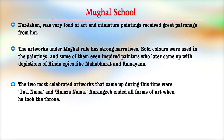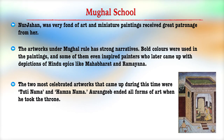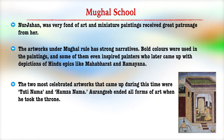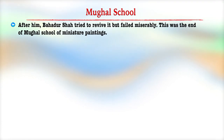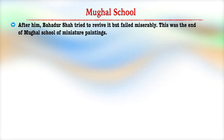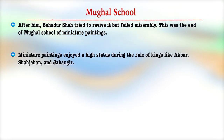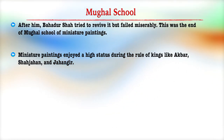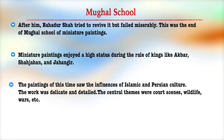The two most celebrated artworks from this period were the Tutinama and the Hamzanama. Though Aurangzeb ended all forms of art when he took the throne, his successor Bahadur Shah tried to revive it. There was a decline of the Mughal school of miniature painting under Aurangzeb. However, the paintings enjoyed great patronage during the rule of emperors like Akbar, Shah Jahan, and Jahangir, and saw the influence of Islamic and Persian culture.